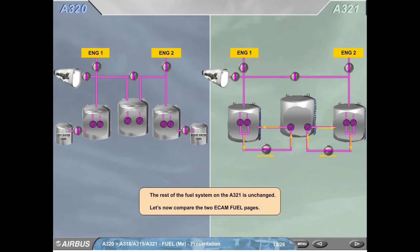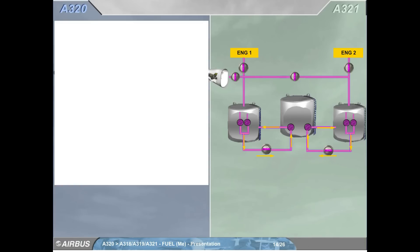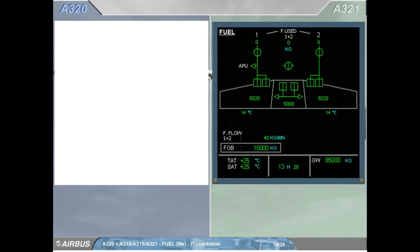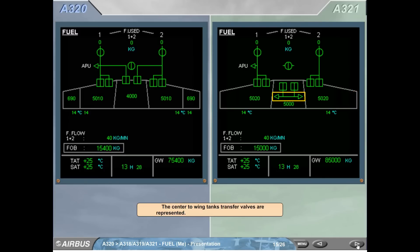The rest of the fuel system on the A321 is unchanged. Let's now compare the two ECAM fuel pages. The A321 fuel system has no outer tanks. The center to wing tanks transfer valves are represented.